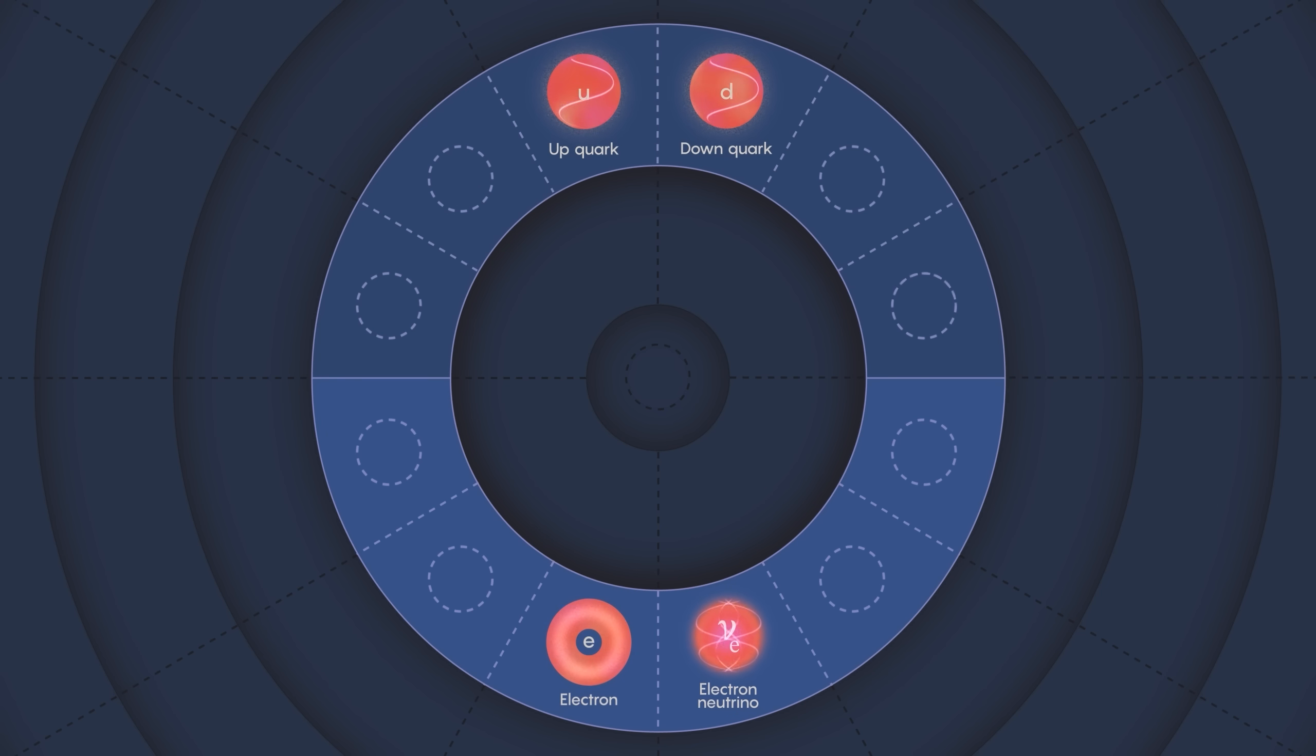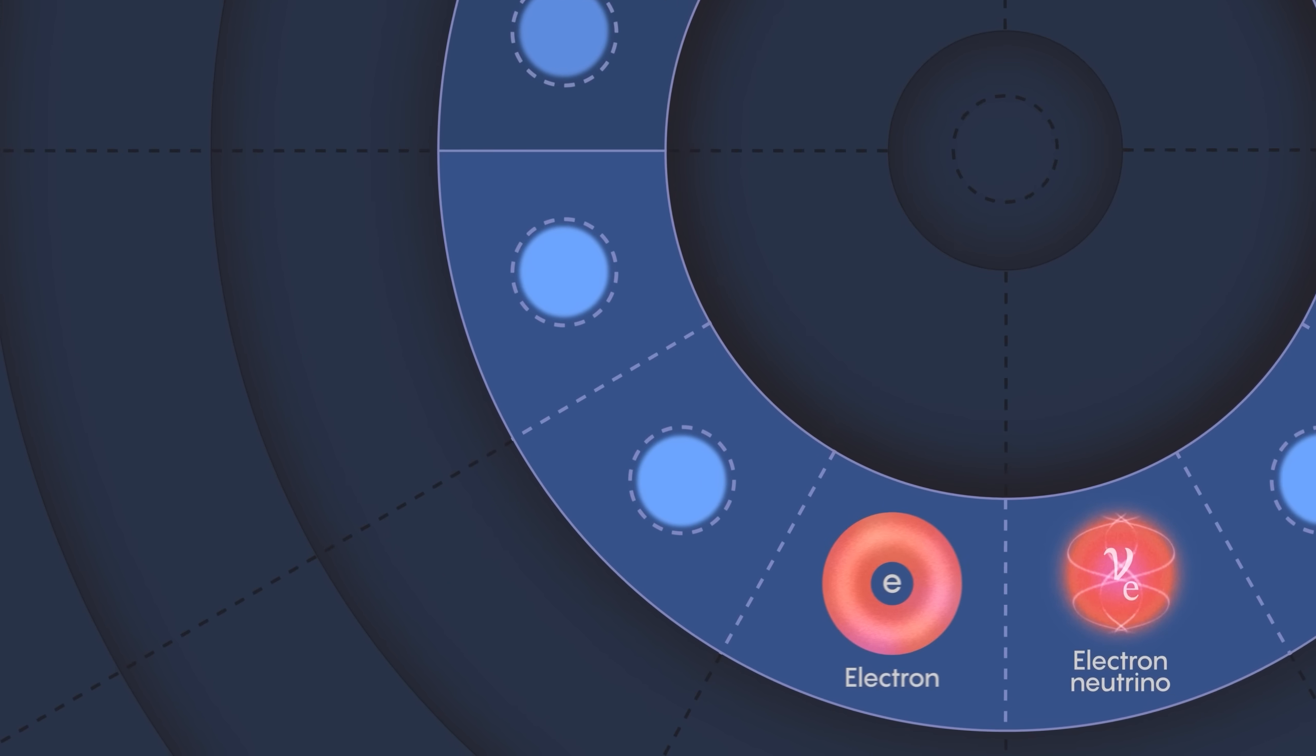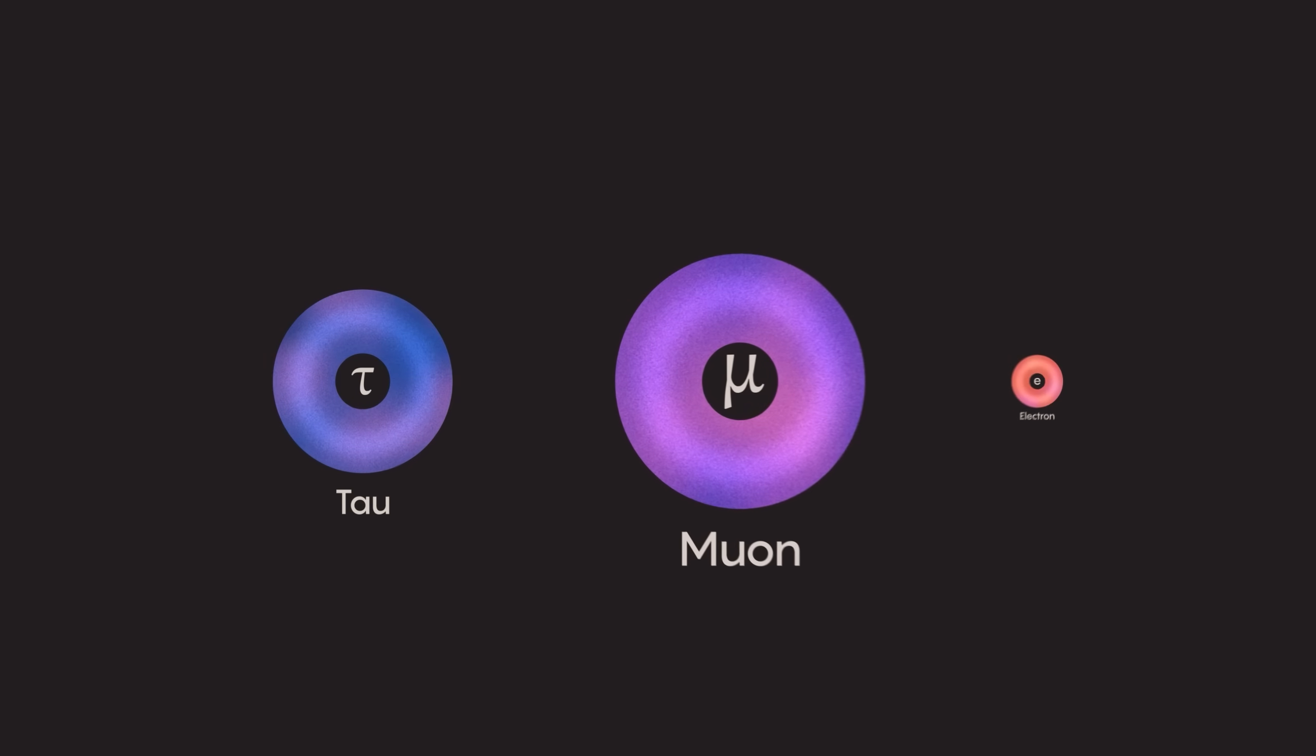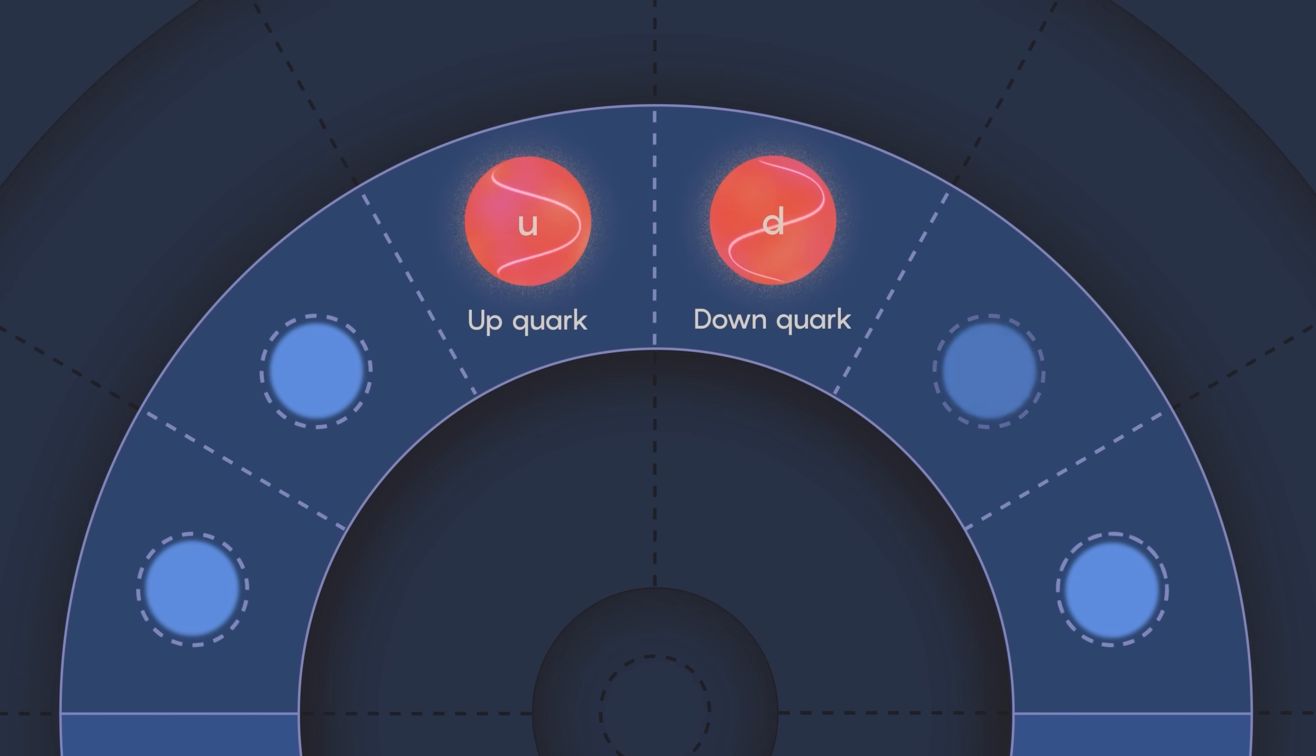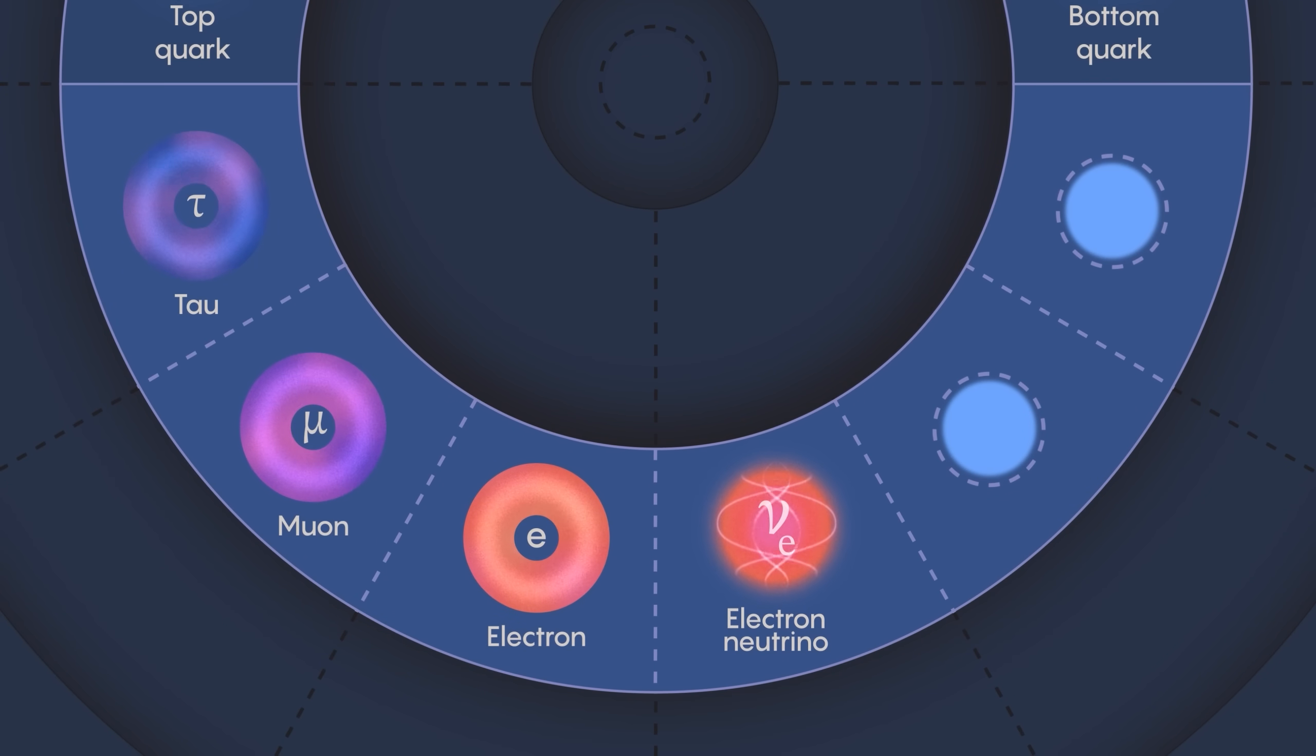But here's where things start to get weird. Because nature didn't stop there. For reasons that we do not understand, she took this collection of four particles and made two further copies. This means that there are actually three different kinds of electron particles. In addition to the original electron that we know and love, there are particles called the muon and the tau. The muon and the tau behave exactly like an electron, with one important exception. They're heavier. The muon is about 200 times heavier than the electron, the tau almost three and a half thousand times heavier. The same generational pattern then repeats for the quarks. There are two heavier versions of the down quark that we call the strange and bottom quarks. And two heavier versions of the up quark called charm and top. And then there are also two more neutrinos. We become a little bit unimaginative in our naming and call the full collection the electron neutrino, the muon neutrino, and the tau neutrino.